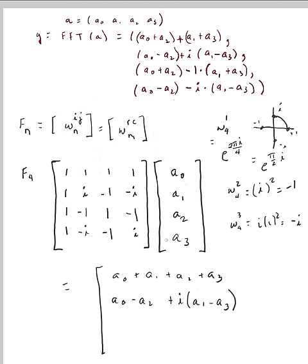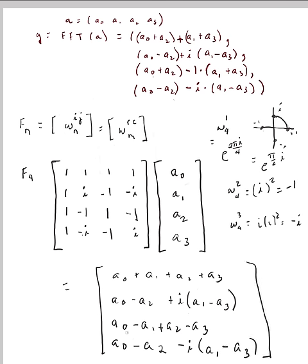The third row against our vector gives a_0 - a_1 + a_2 - a_3. For the last row, collecting real and imaginary parts separately, we get a_0 - i·a_1 - a_2 + i·a_3. Checking: a_0 - a_2 matches, and -i·(a_1 - a_3) matches. We're good — the matrix multiplication confirms the recursive FFT result.